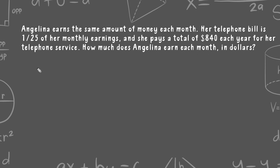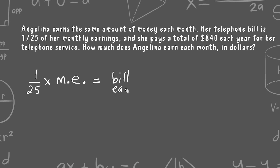Here is one approach to this problem. It says that her telephone bill is one twenty-fifth of her monthly earnings. So that means if we took one twenty-fifth and multiplied it by her monthly earnings, that is going to equal how much her phone bill is each month. The problem doesn't tell us her monthly earnings — that is what we are trying to determine.